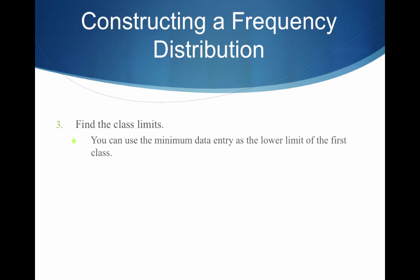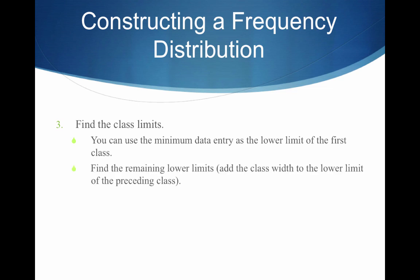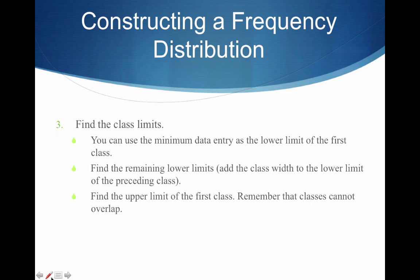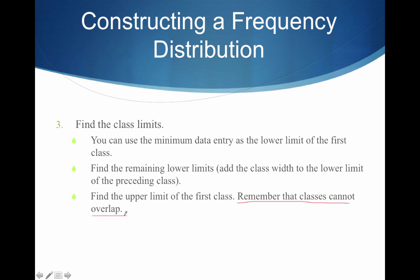Third in the recipe, we want to find the class limits. We use the minimum data entry as the lower limit of the first class, then find the remaining lower limits by adding the class width to the lower limit of the preceding class. We then find the upper limit of the first class. Classes cannot overlap, so we make sure the next lower limit does not cross the previous upper limit.